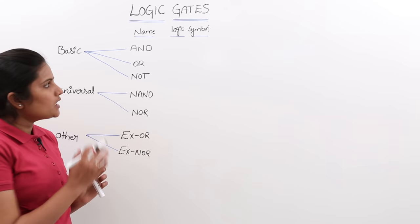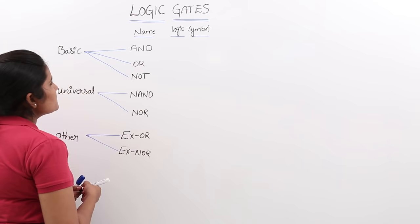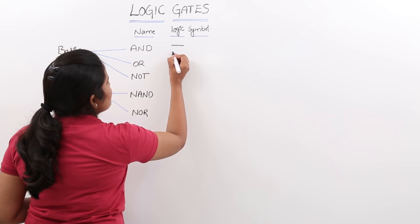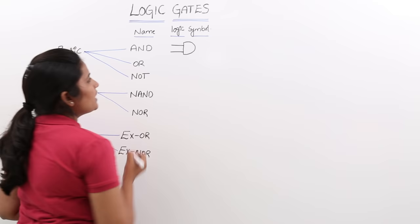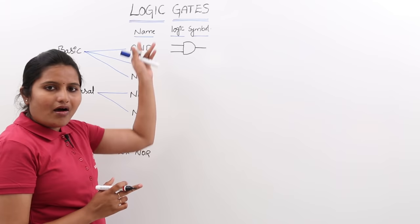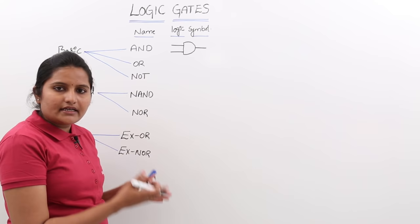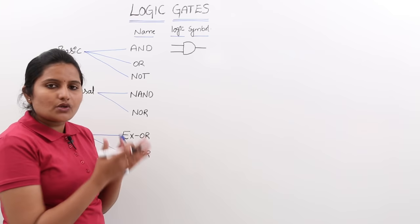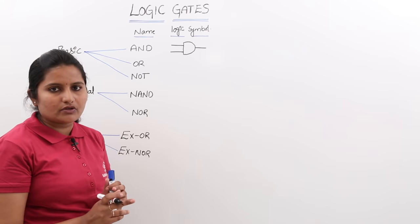Now we will see logic symbols. Let me draw logic symbols for each and every gate. For AND gate, the logic symbol will be like this. It may have more than 2 inputs and only 1 output. Except the NOT gate, all other gates can have N number of inputs, which we can call excitations. All gates can have N number of excitations and only 1 response.